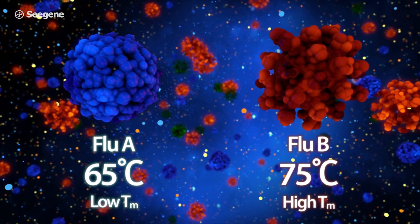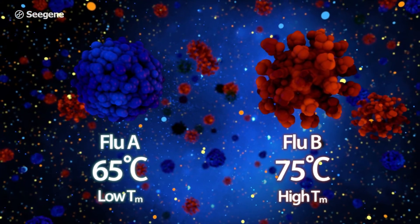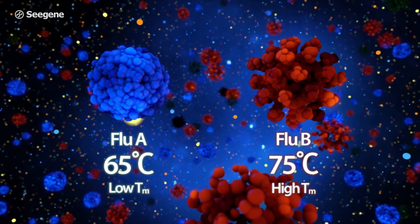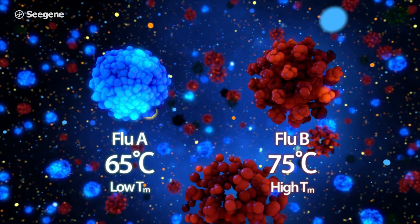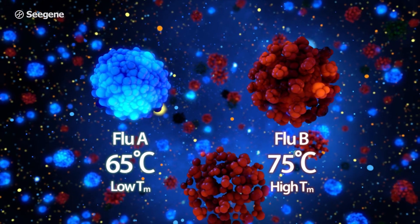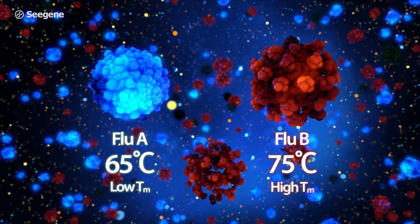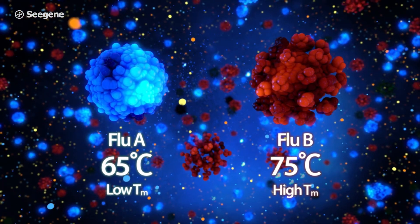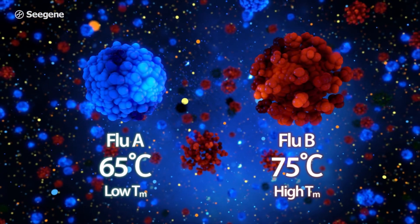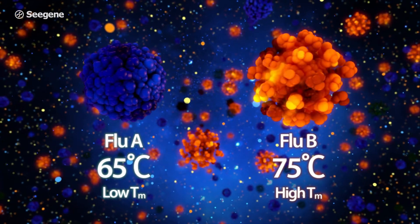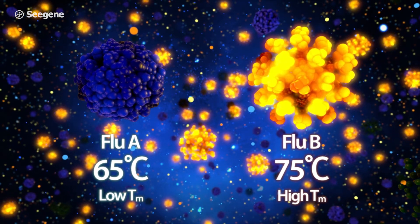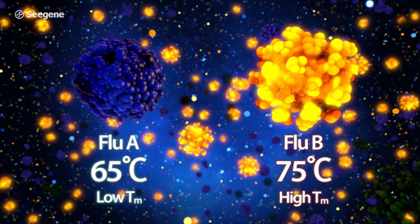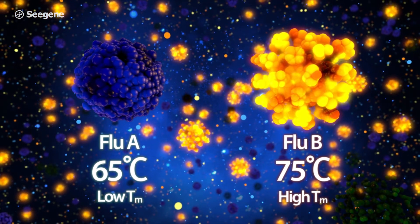This technology combination paves the way for CT measurement of multiple targets in a single channel. To show how MUDT works, we designed two targets using our TOS technology. The Flu A target is designed to emit a robust signal at less than the relatively low temperature of 65 degrees Celsius. The Flu B target is designed to emit a robust signal at less than 75 degrees Celsius.